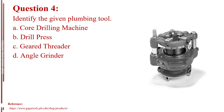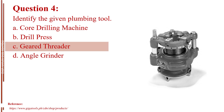Question number four. Identify the given plumbing tool. Letter A, core drilling machine. Letter B, drill press. Letter C, geared threader. Letter D, angle grinder. The answer is Letter C, geared threader.